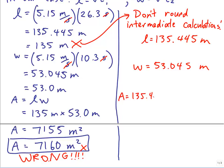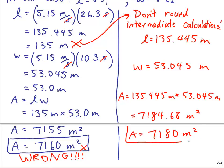When you multiply those out, you get 7184.68 meters squared, which when you round to three significant figures gives you 7180 meters squared. And that is correct. That's the answer that's in the back of the book.